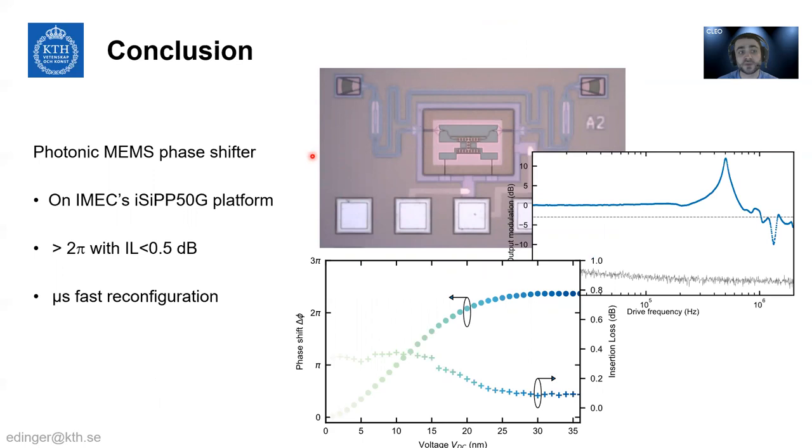So to conclude, we show the Photonic MEMS phase shifter. It was for the first time implemented on IMEC's iSiPP50G platform with access to PDK components and options for low resistance routing with different metal layers and doping. We show the device has good performance on par with thermal counterparts and even faster actuation reaching the microsecond scale.